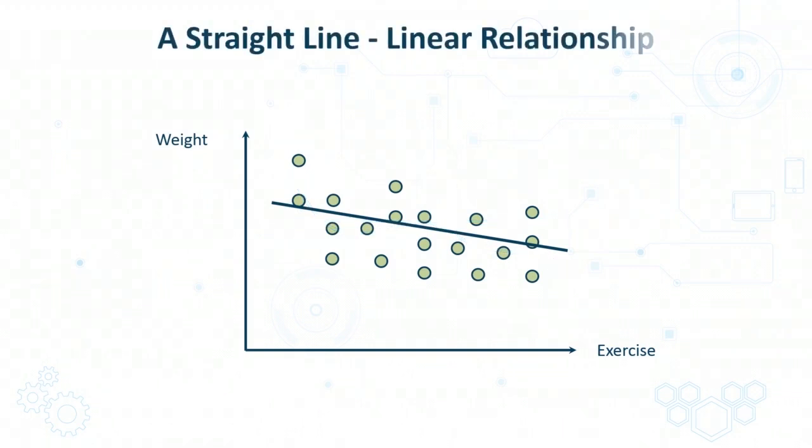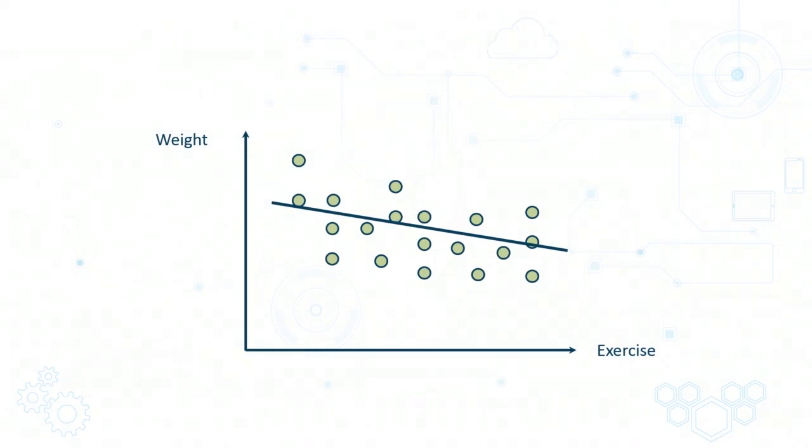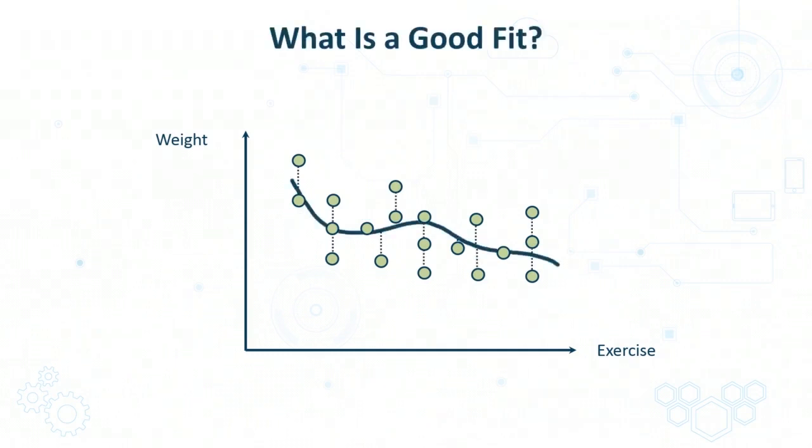When any relationship is modeled using a straight line or a plane, rather than some kind of squiggly or complex curve, we say that the relationship between the variables is linear. We have already seen that there can be multiple curves or lines which can represent the relationship between two variables, but which of these happens to be the best fit line or curve? Simply put, it is that line or curve which happens to be closest to the points in your data.